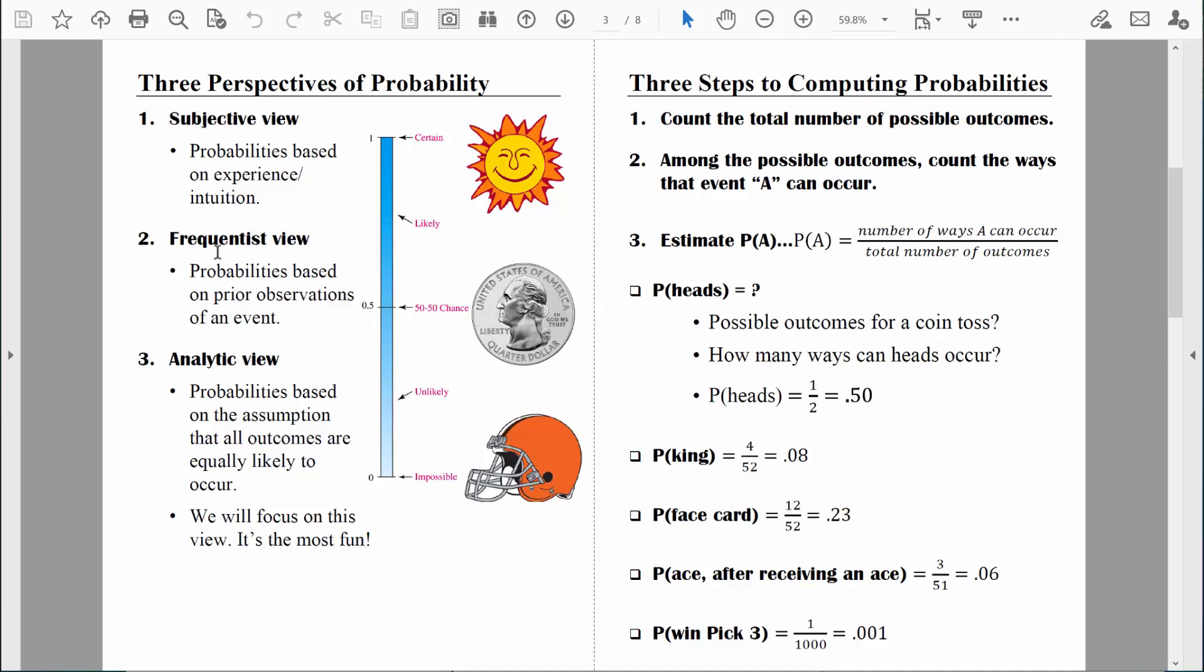Let's talk next about the frequentist view. Here we're talking about computing probabilities based on prior observations. So essentially, this is a way of computing probabilities based on past data. You can probably see already that the frequentist view is an improvement upon the subjective view, because here we're calculating the probability of an event based on having some information, based on past data. Let me give you an example. Every single day that I've been alive, the sun has risen in the morning. And every single day that my parents have been alive, the sun has risen in the morning. In fact, every single day that every single one of us throughout history has been alive, the sun has risen in the morning.